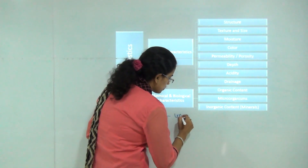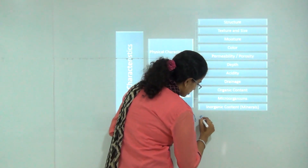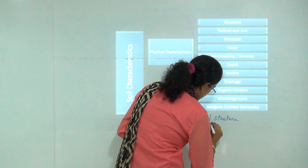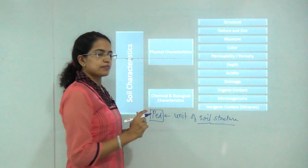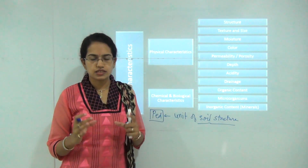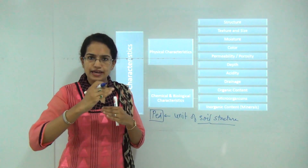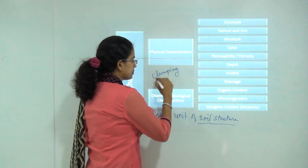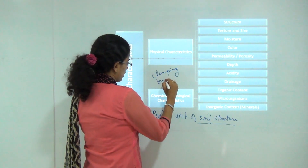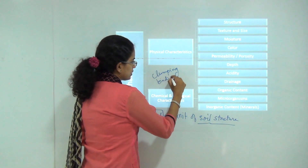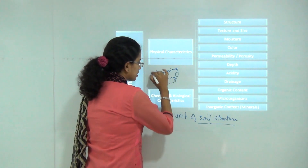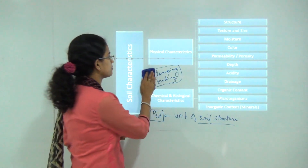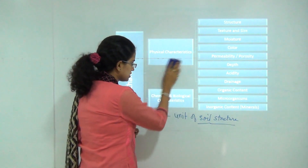PED is a unit of soil structure. This unit of soil structure can be arranged by various means — there can be parallel arrangement, there can be clumping, there can be binding of soil and so on. What we need to understand is what are the basic characteristics found in the soil and what characteristics affect the growth of plants in the soil.